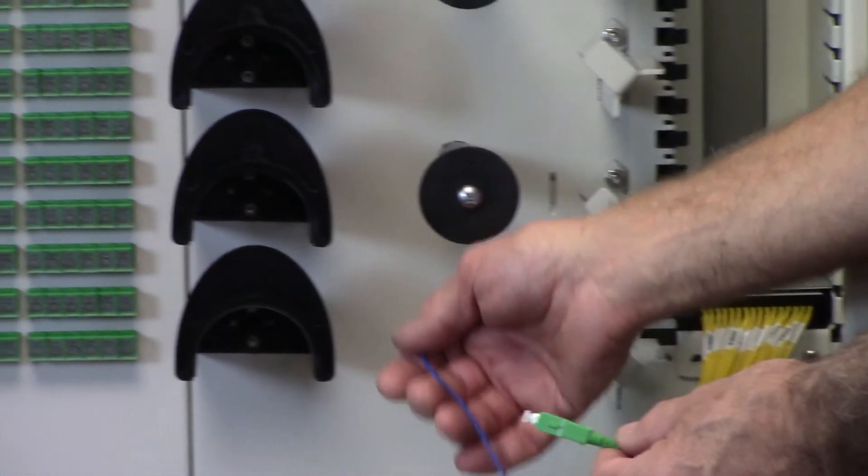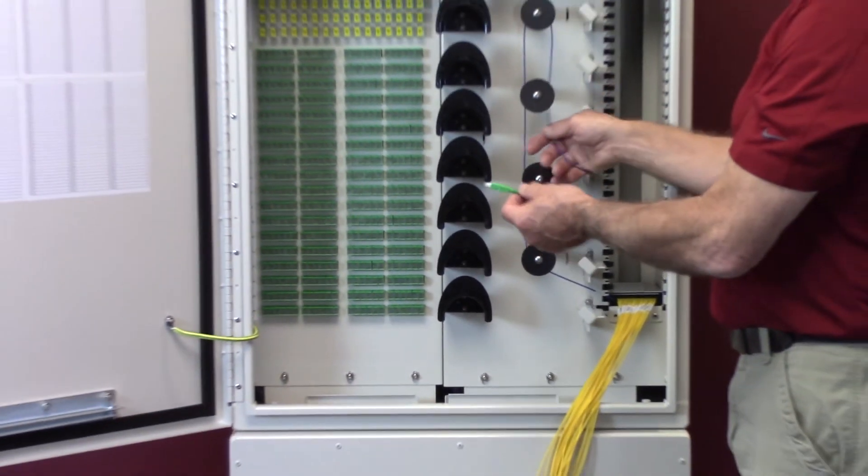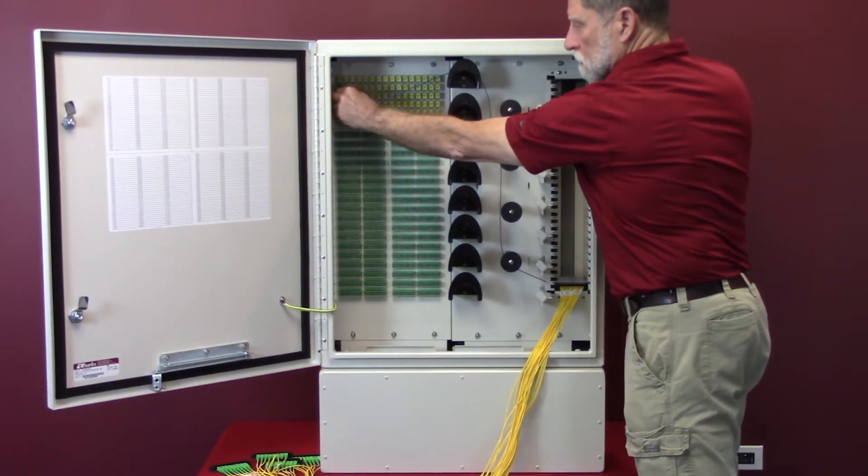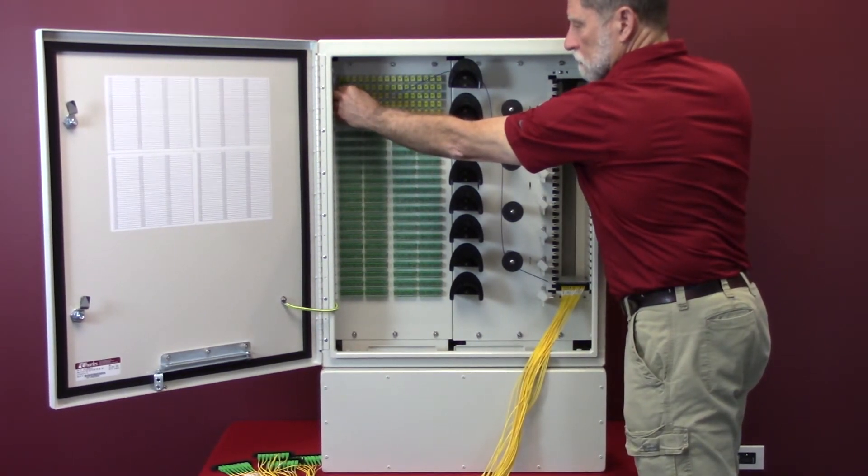Once the splitter module has been installed, splitter tail routing can begin as shown. For best access during troubleshooting or repair activities, route each splitter's blue input tail behind the splitter's output fiber bundle.